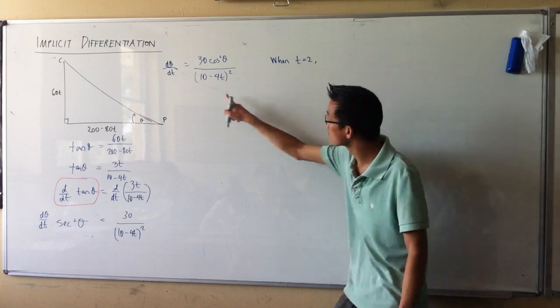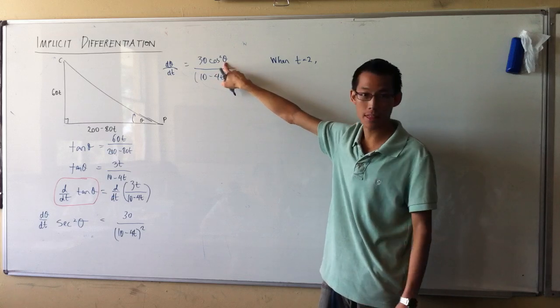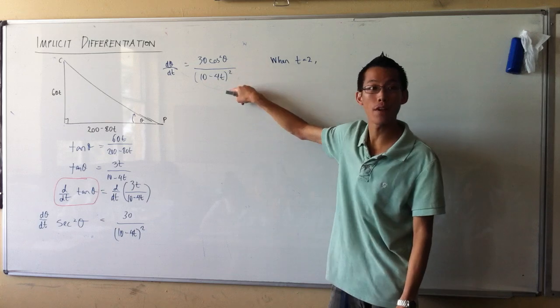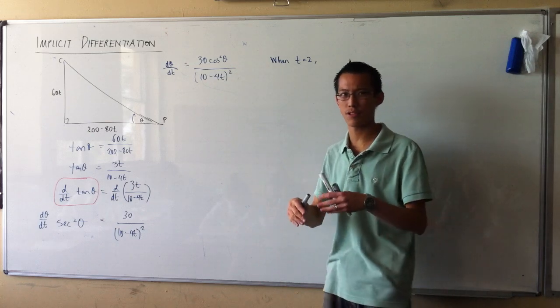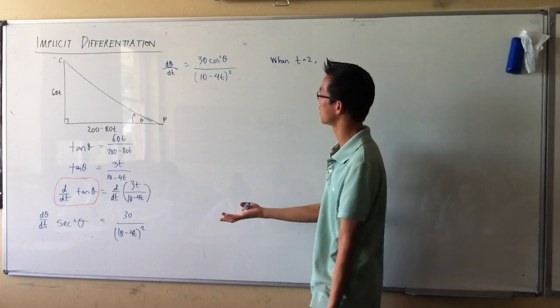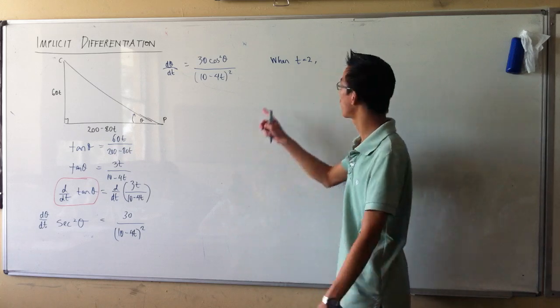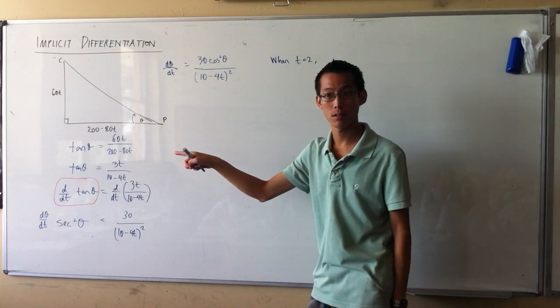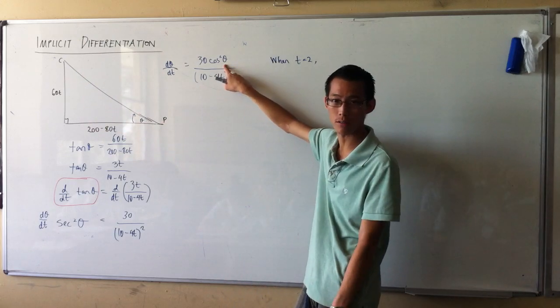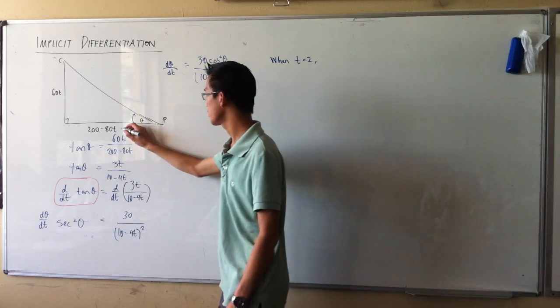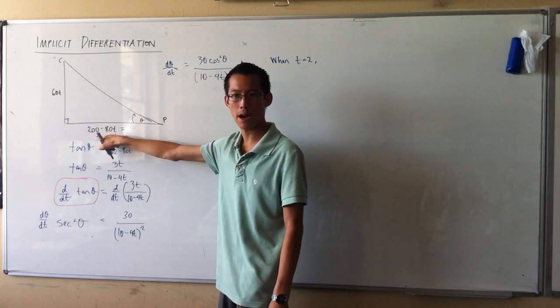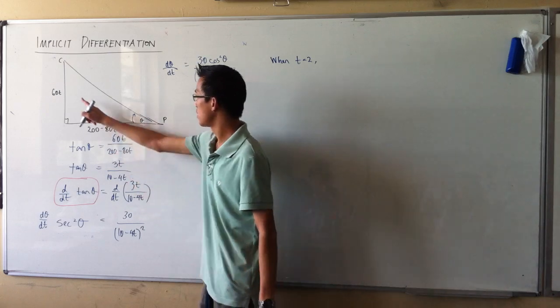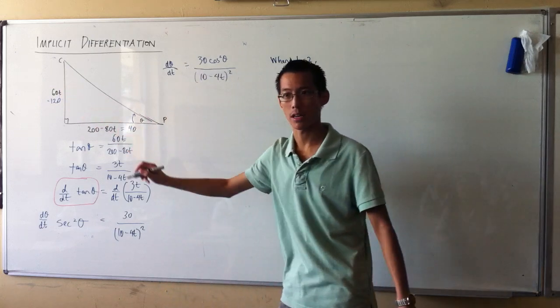So I can sub that into here and I'll get some values, but then I need to know what theta is. So again, like before, we've got the derivative in terms of two different variables. So that's what implicit differentiation gives as a result, which is a little unusual, but it's not harder to work with, because if I know what t is, then I can know what all of these are and I can work out what theta is. Or rather, I can work out what cos θ is. So when t is 2, this will be 200 minus 160, which is 40. When t is 2, this will be 120.